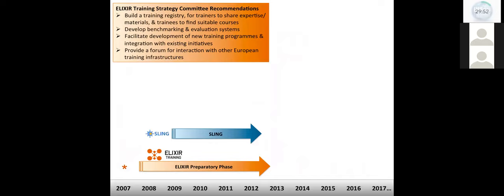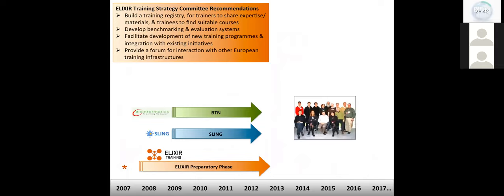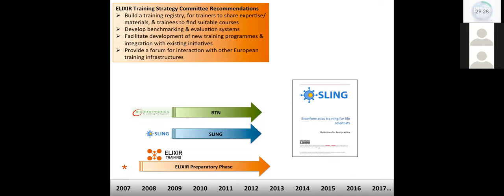So those annual SLING training networking sessions became a force in their own right. Those who attended them felt they were sufficiently valuable to establish a bioinformatics training network, the BTN. Importantly, the BTN wasn't just a talking shop. Each meeting set targets, led to actions, publications, and so on. And ultimately fed into the SLING end of project deliverable, which is bioinformatics training for life sciences scientists, guidelines for best practice. So the emphasis on SLING and the BTN was much more on trainers and sharing their experiences than user training.